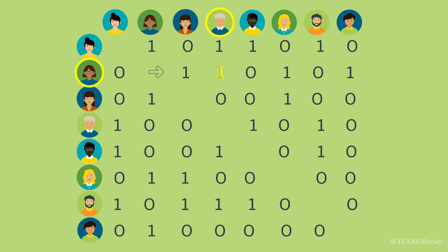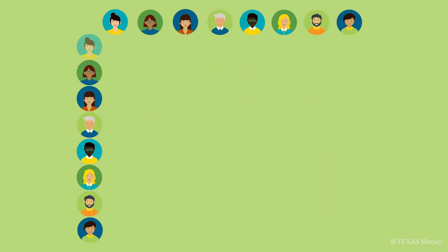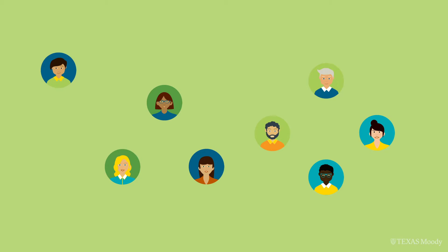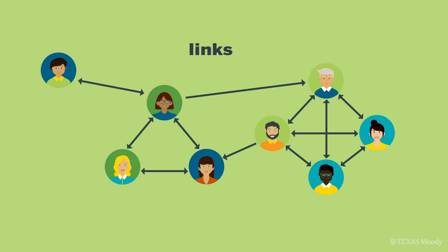So Clara emails Enzo, but Enzo doesn't send messages to Clara. Notice the email messages are directional. Do you see any patterns? It's hard to if we're looking at the raw data. Network analysis offers us visualization and analytical techniques that help us find patterns in data like these. Let's look at some simple visualizations or sociograms that follow the same logic of the organizational chart we looked at before. Each person is a node, and we add a link where the data indicates emails flowing. Now what do you see? Take a moment and jot down a few observations.